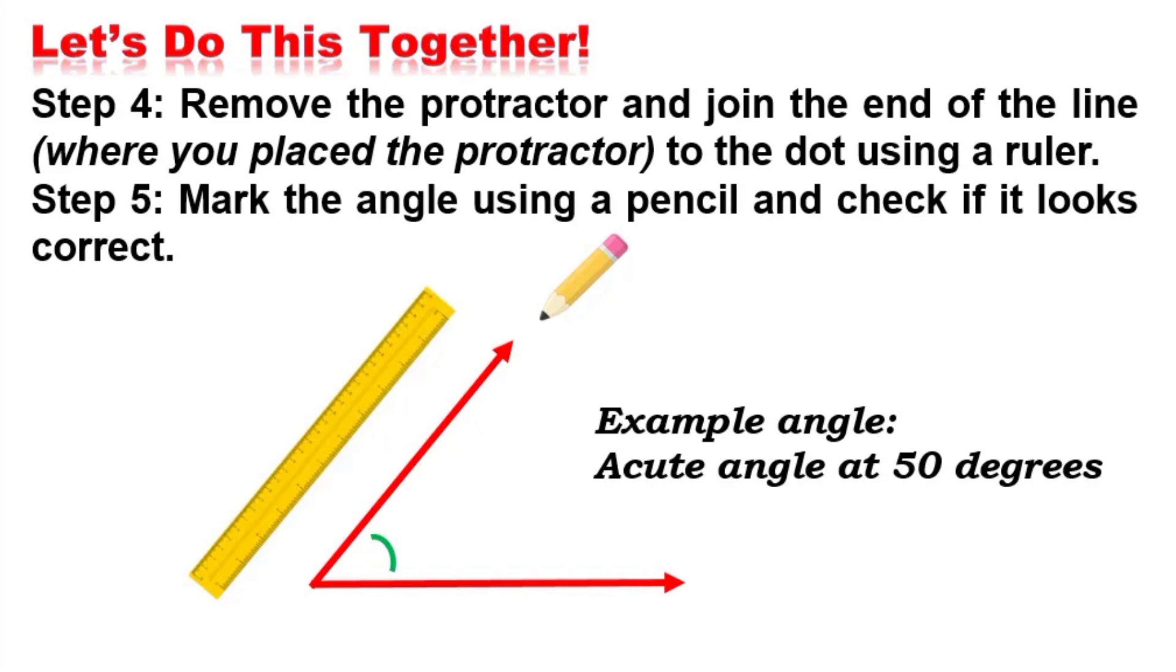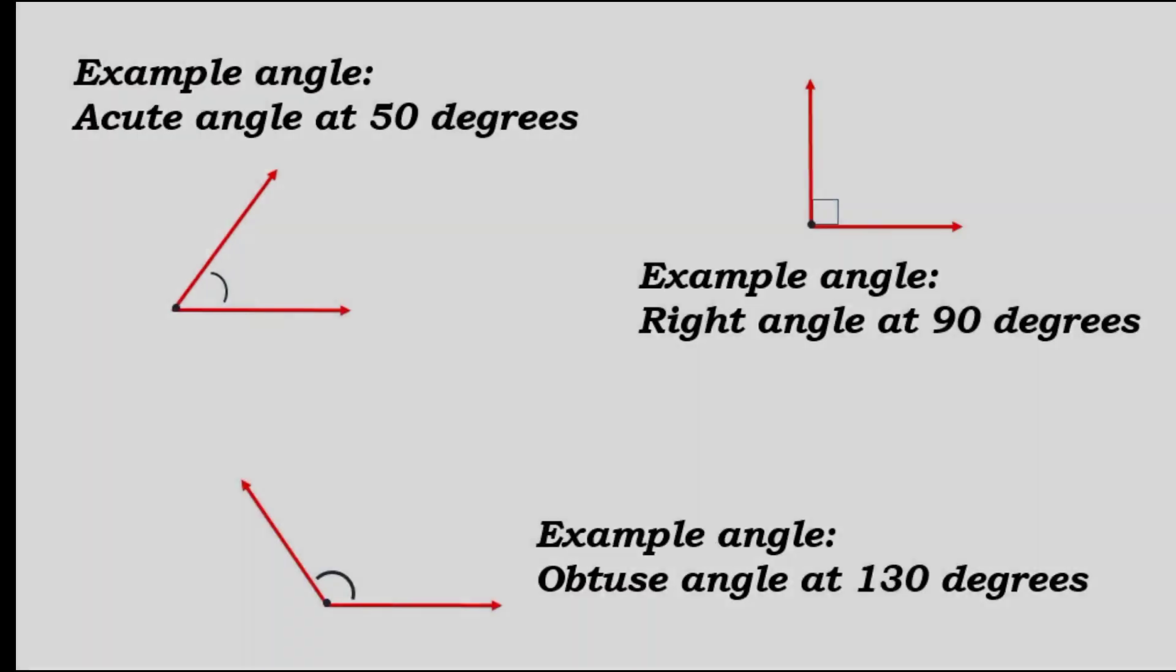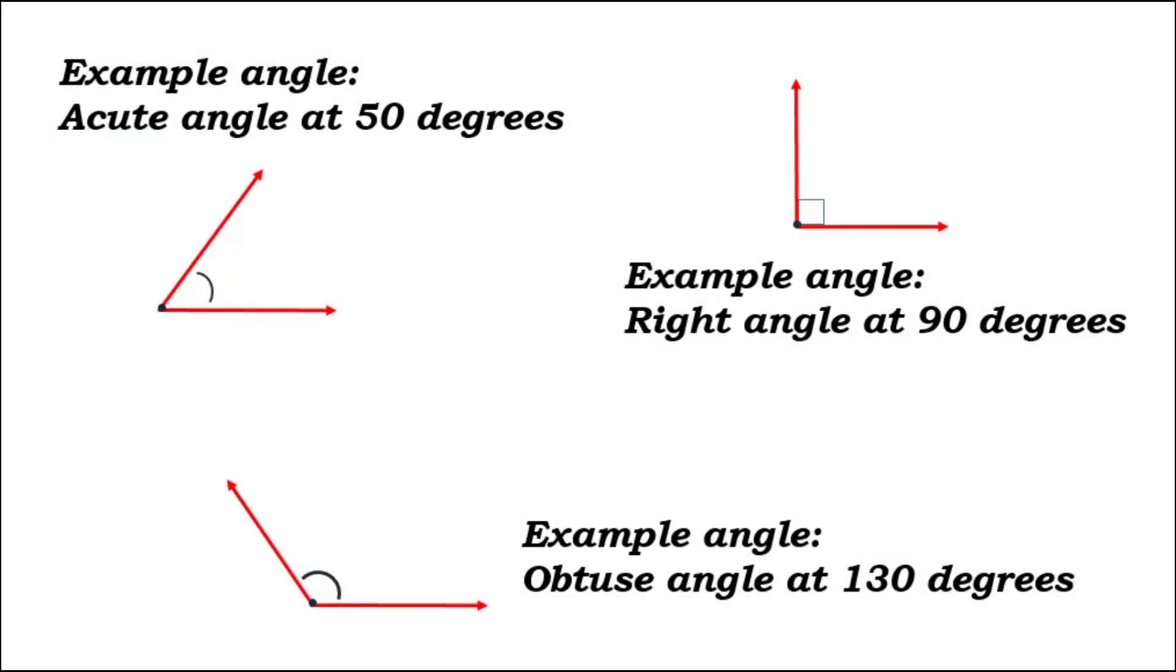Mark the angle using a pencil and check if it looks correct. You now have an acute angle illustration at 50 degrees. Continue doing the other two angles using the same procedures.